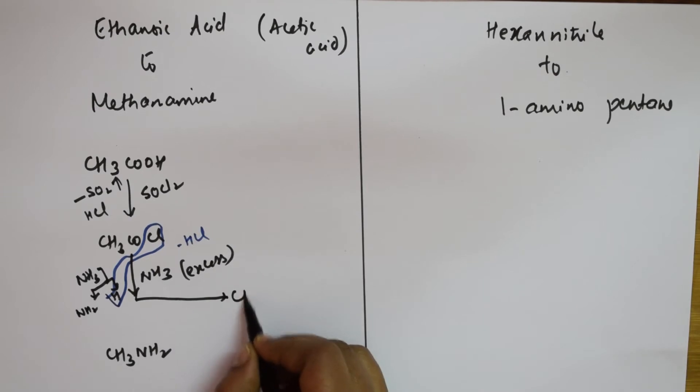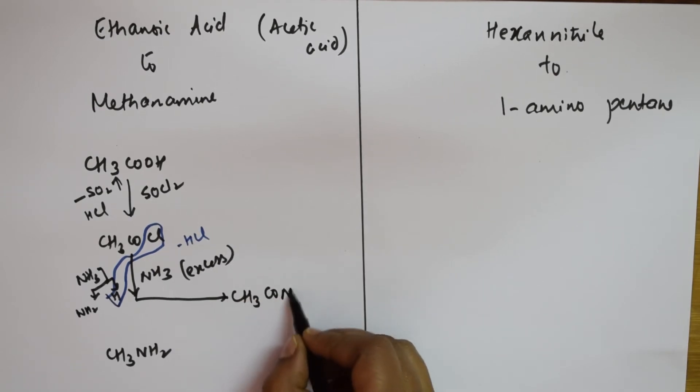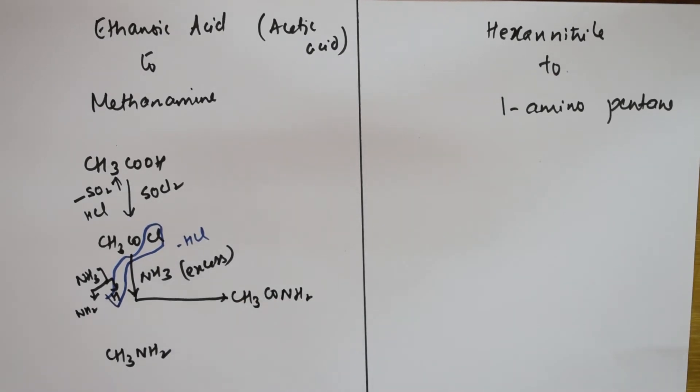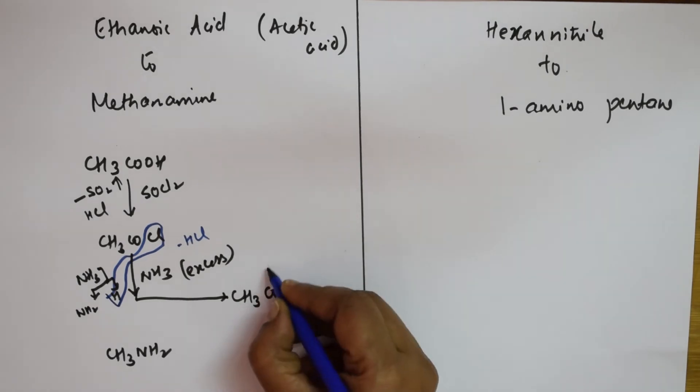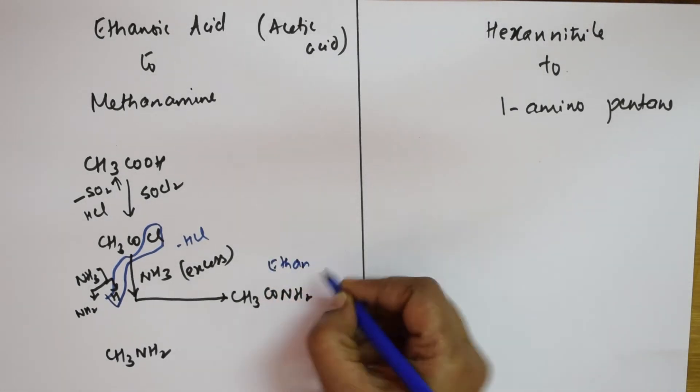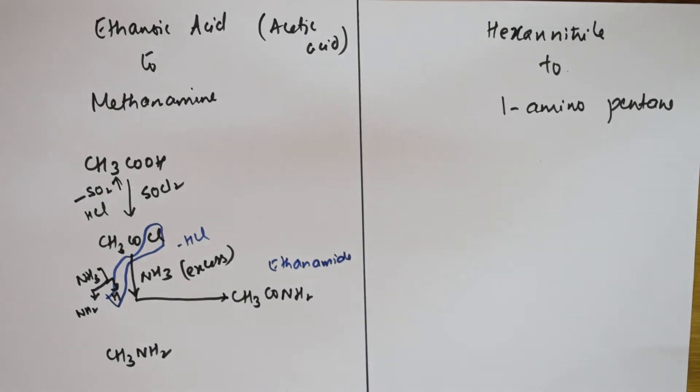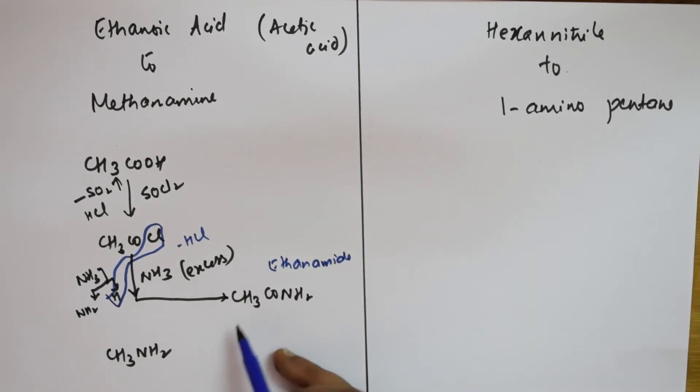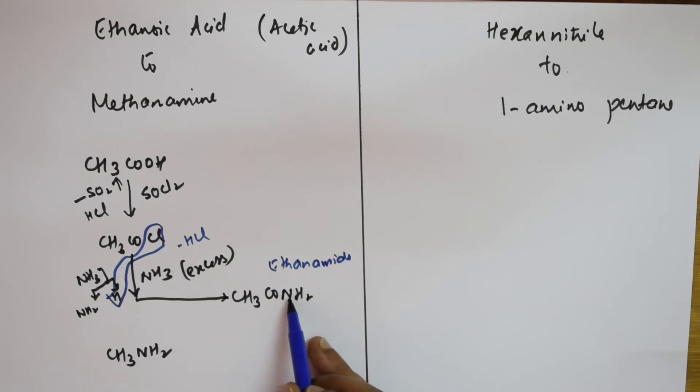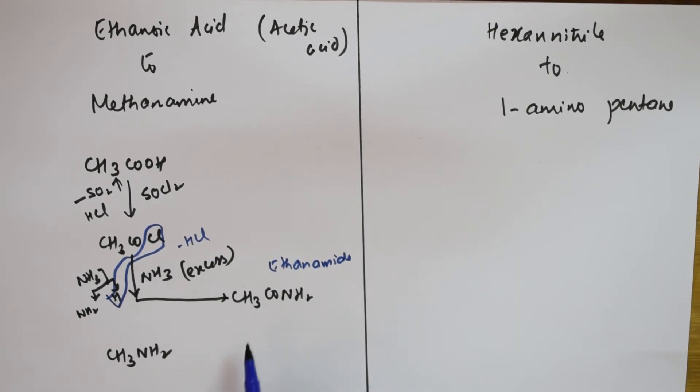What am I going to get? Let me see. I'm going to get CH3CO and NH2. What is the name of this compound? This is called—two carbons—so this is ethnamide. Done.